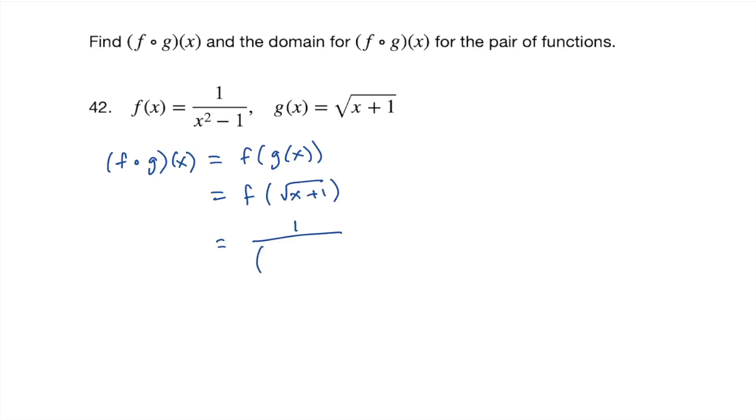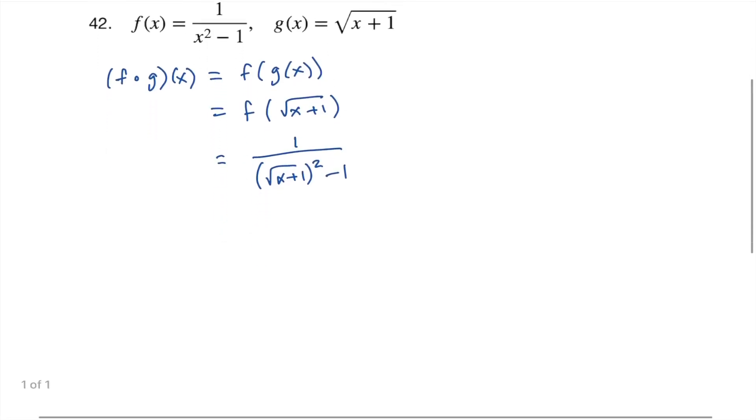So we are going to have one over the square root of x plus one, going to square that, and minus one. So we square the square root - the squaring undoes the square rooting and so we're just left with x plus one, and then we have the minus one. So we are left with one over x. Now we need the domain for this.